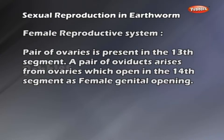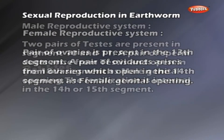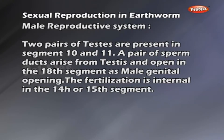Male Reproductive System: Two pairs of testes are present in segments 10 and 11. A pair of sperm ducts arise from the testes and open in the 18th segment as male genital opening.